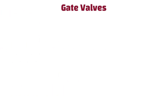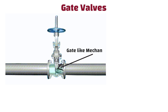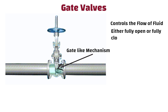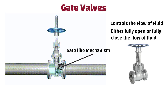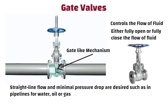Gate valves. The name gate valve comes from the gate-like mechanism inside the valve that controls the flow of fluid. It can either fully open or fully close the flow of fluid. These types of valves are typically used in applications where a straight line flow and minimal pressure drop are desired, such as in pipelines for water, oil or gas.